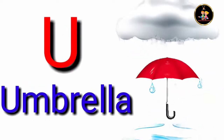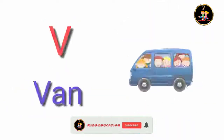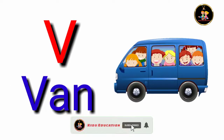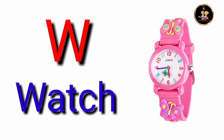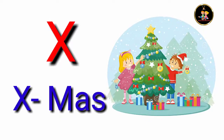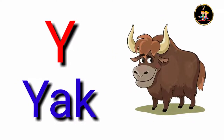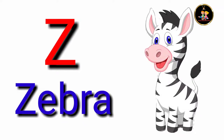U for umbrella, V for van, W for watch, X for Xmas, Y for yard, Z for zebra.